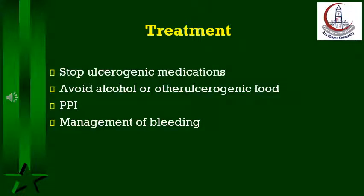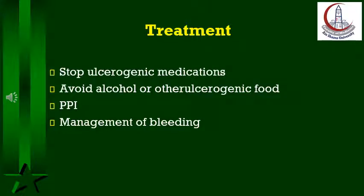Treatment includes avoiding spices, fat, coffee, and any irritating food. In severe cases, oral feeding can be stopped for a few days and IV fluids are started. Antacids, H2 blockers, or proton pump inhibitors usually result in prompt healing. Blood transfusion is needed in case of hematemesis. Total gastrectomy is rarely indicated in life-threatening hematemesis not controlled by medical treatment.